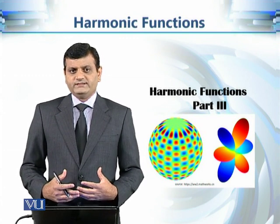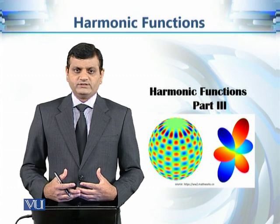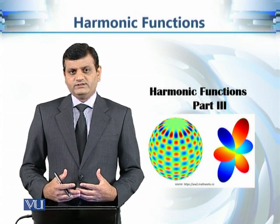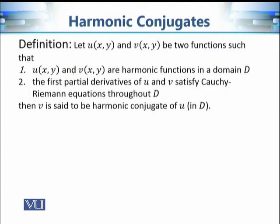Now, how to find these harmonic conjugates? This is going to be our discussion in this part. Let's recall what a harmonic conjugate is. If we are given two real-valued functions U(x,y) and V(x,y) such that U and V are harmonic functions in a domain D — that's the first condition — and the second condition is that the first partial derivatives of U and V satisfy the Cauchy-Riemann equations throughout D, then V is said to be the harmonic conjugate of U.